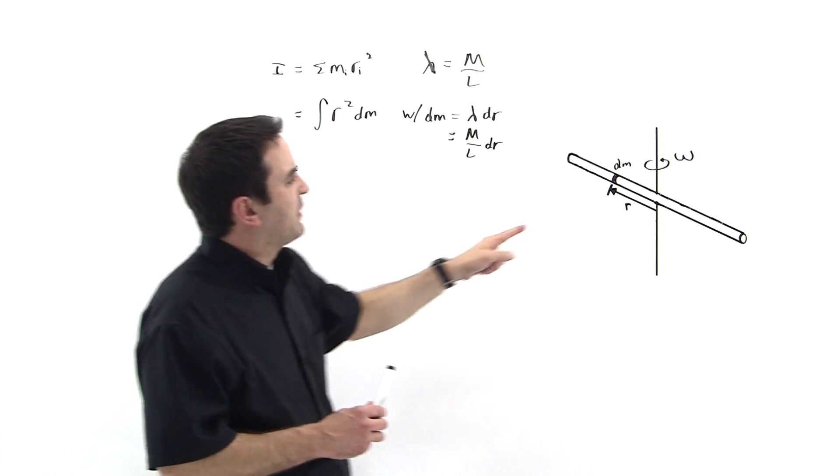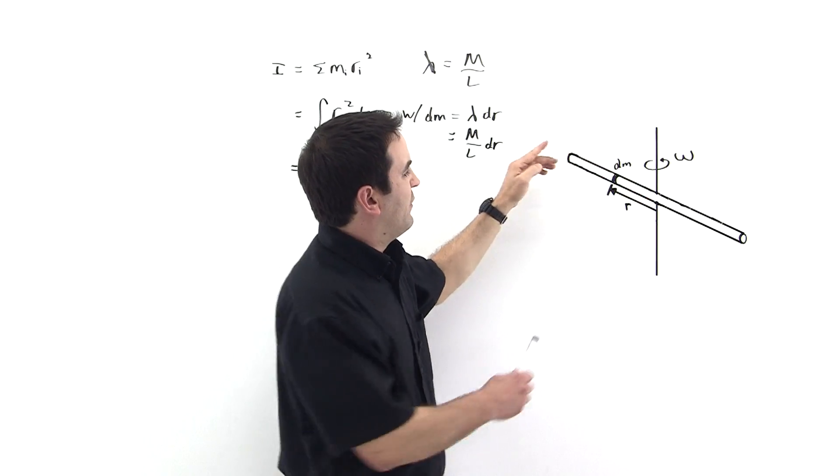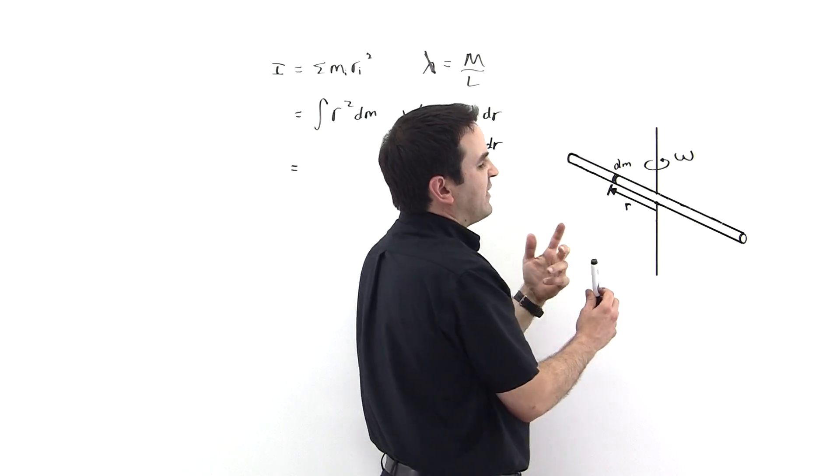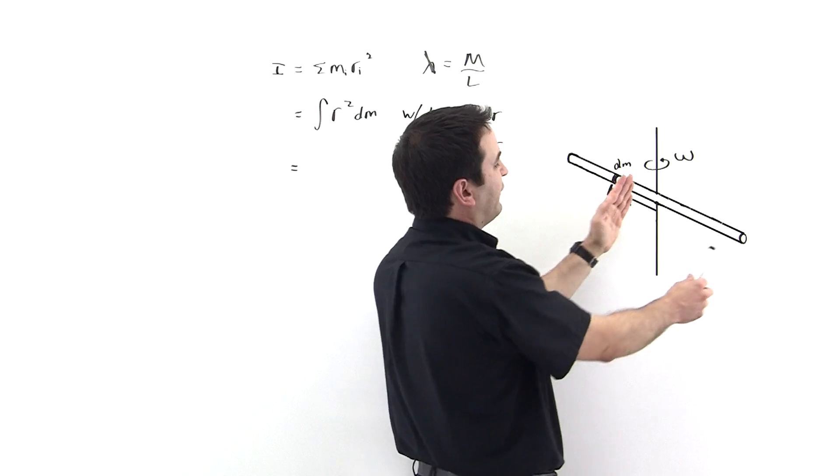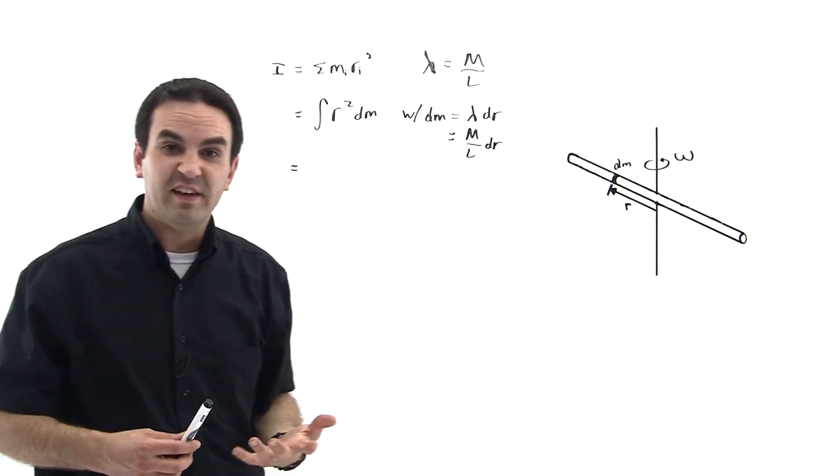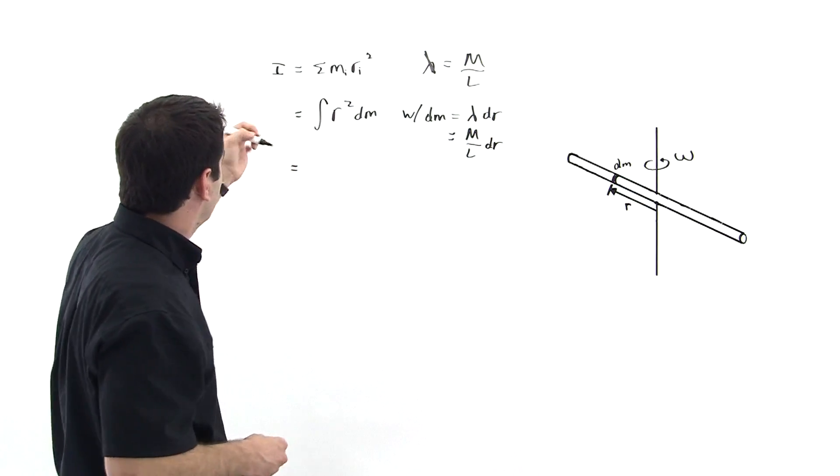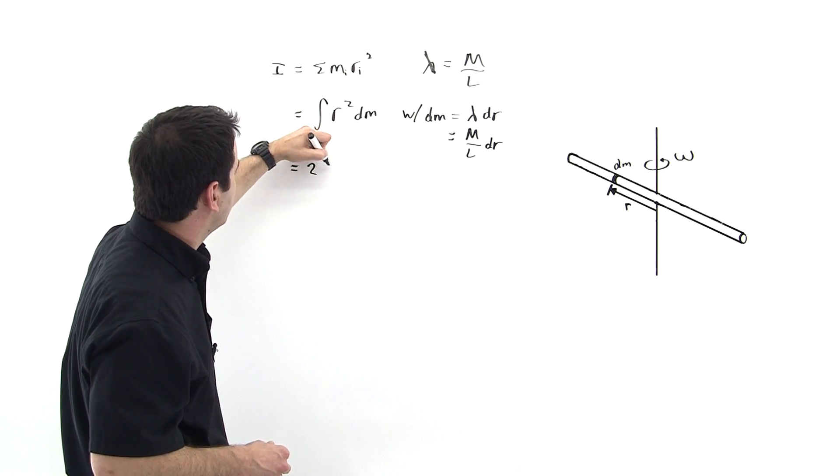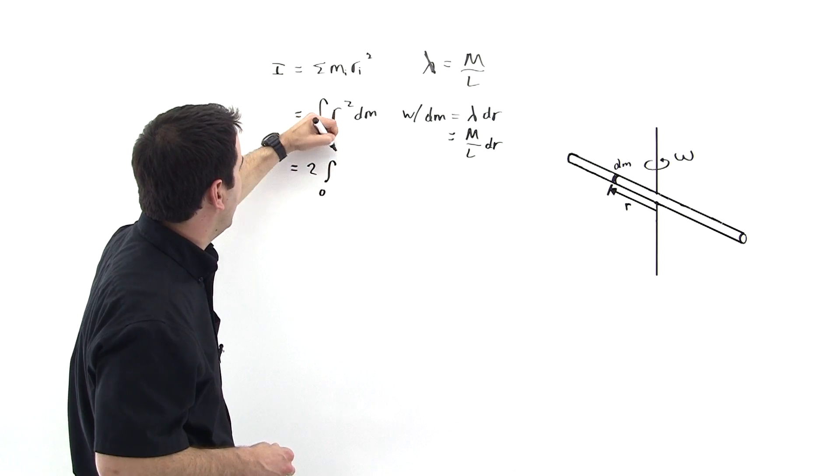Also, but notice that because we're just doing that for one side of the rod, that the equivalent calculation could be carried out for the other side of the rod. So we're just going to multiply the integral times 2. So 2 times the integral from 0 to l over 2,